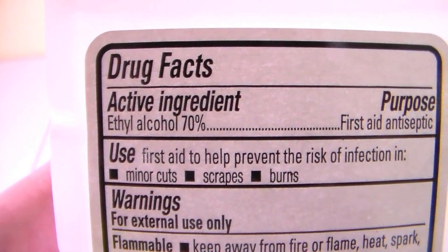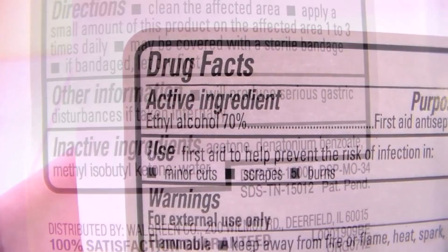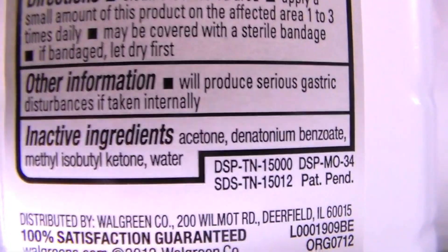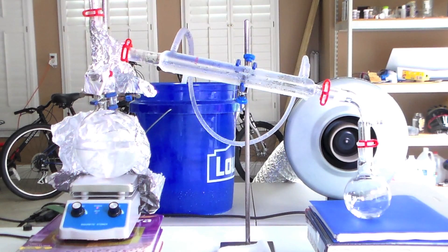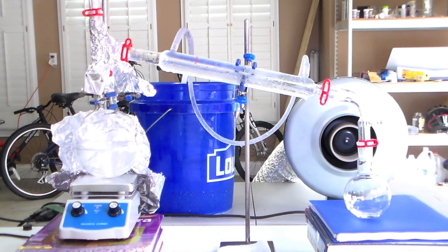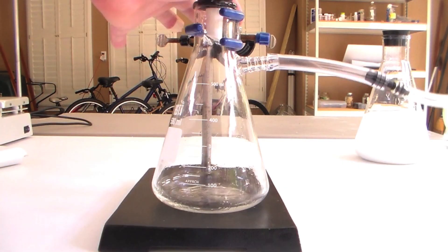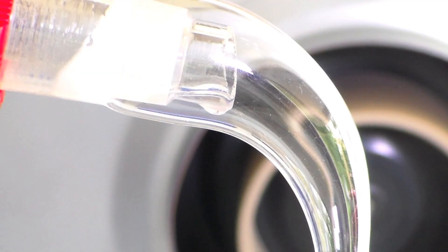It typically contains ethyl alcohol and water, denatured with small amounts of acetone, methyl isobutyl ketone, and denatonium benzoate. In this video we will separate the ethanol from all of these contaminants to obtain nearly pure ethanol.